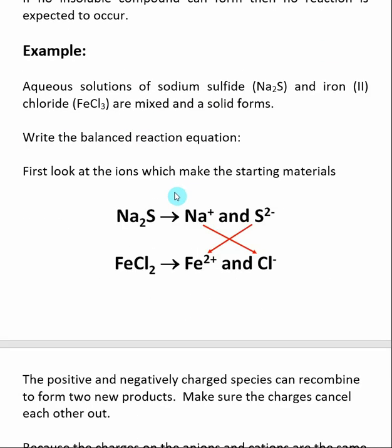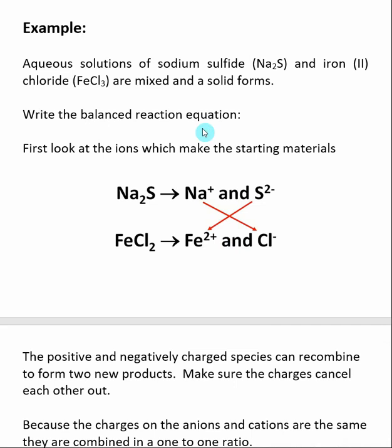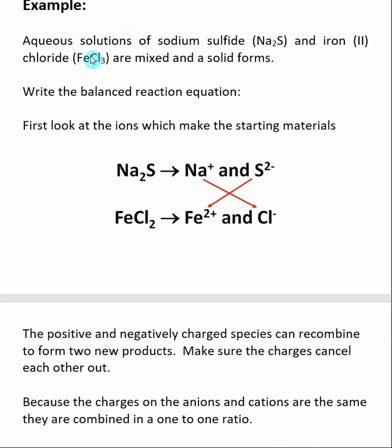Let's look at an example. Here we are going to focus on determining what the products of our reaction are. If we know that a precipitate forms, how do we determine what that precipitate is? We are taking two aqueous solutions of soluble salts. Our first soluble salt is sodium sulfide, our second is iron chloride. A solid forms and our question is: what is the molecular formula of this solid? We want to arrive at an overall balanced reaction equation.